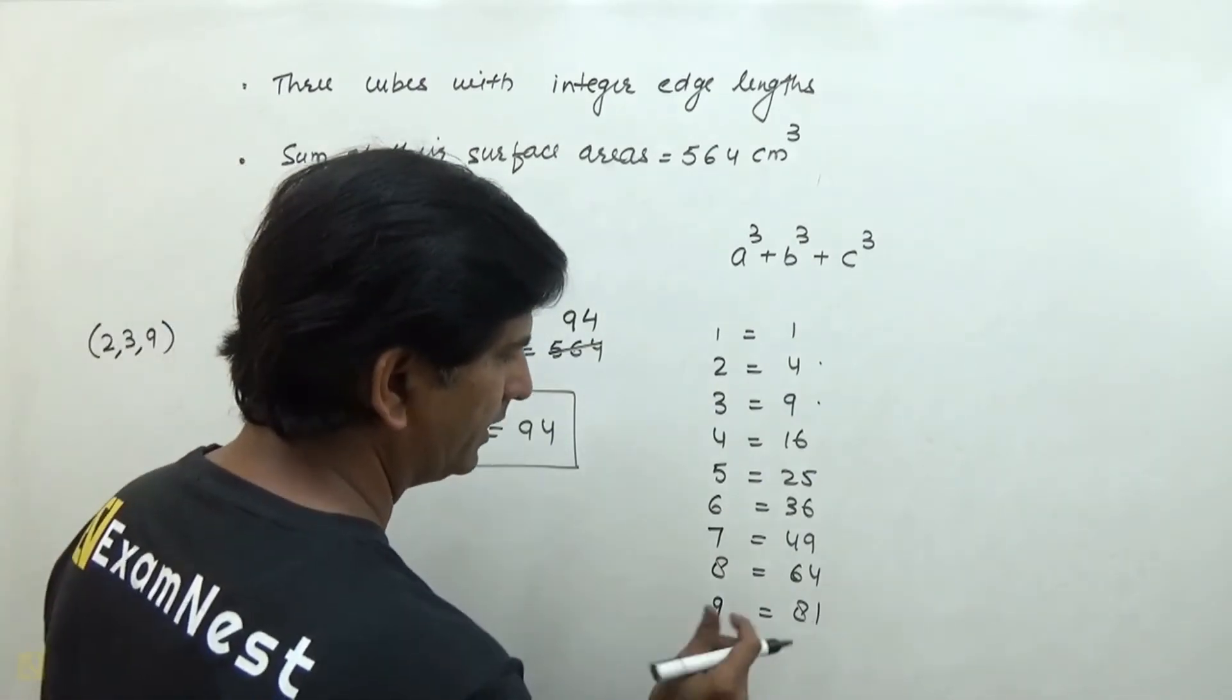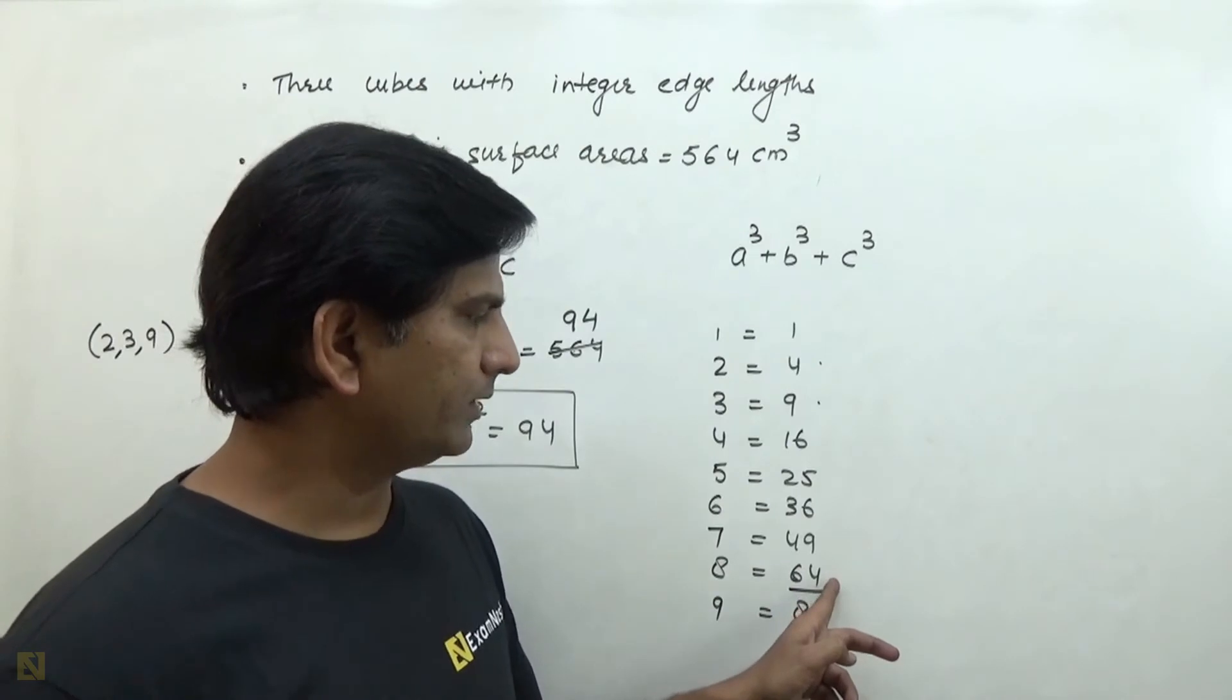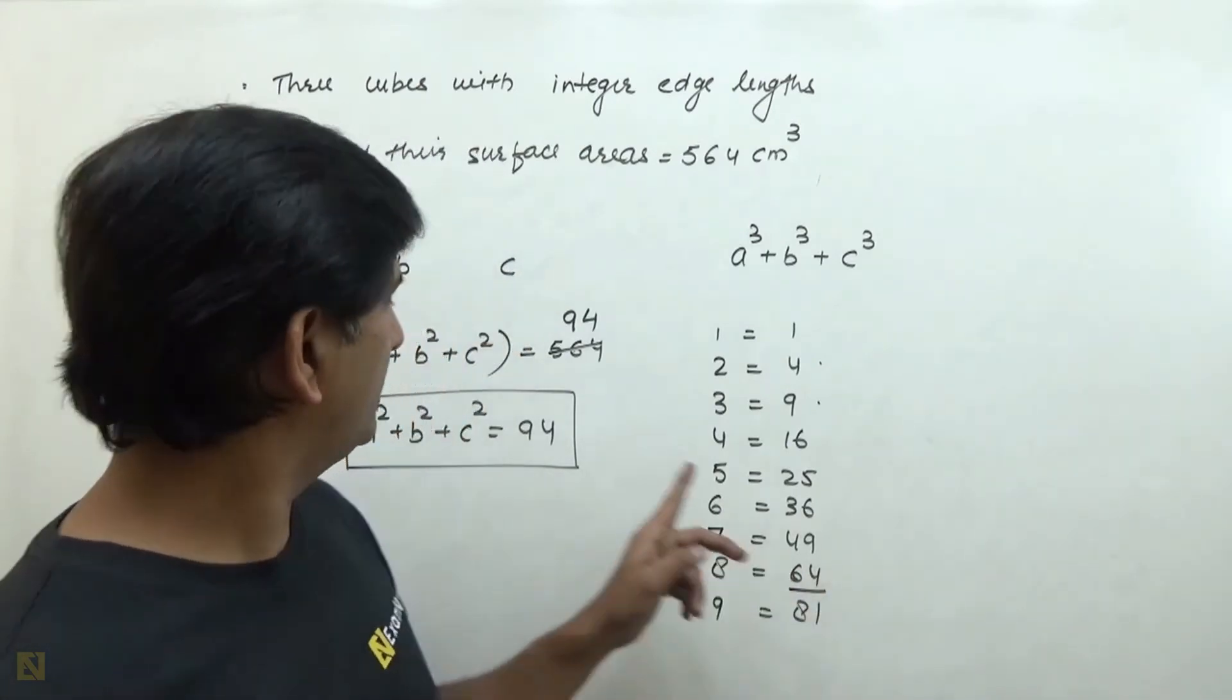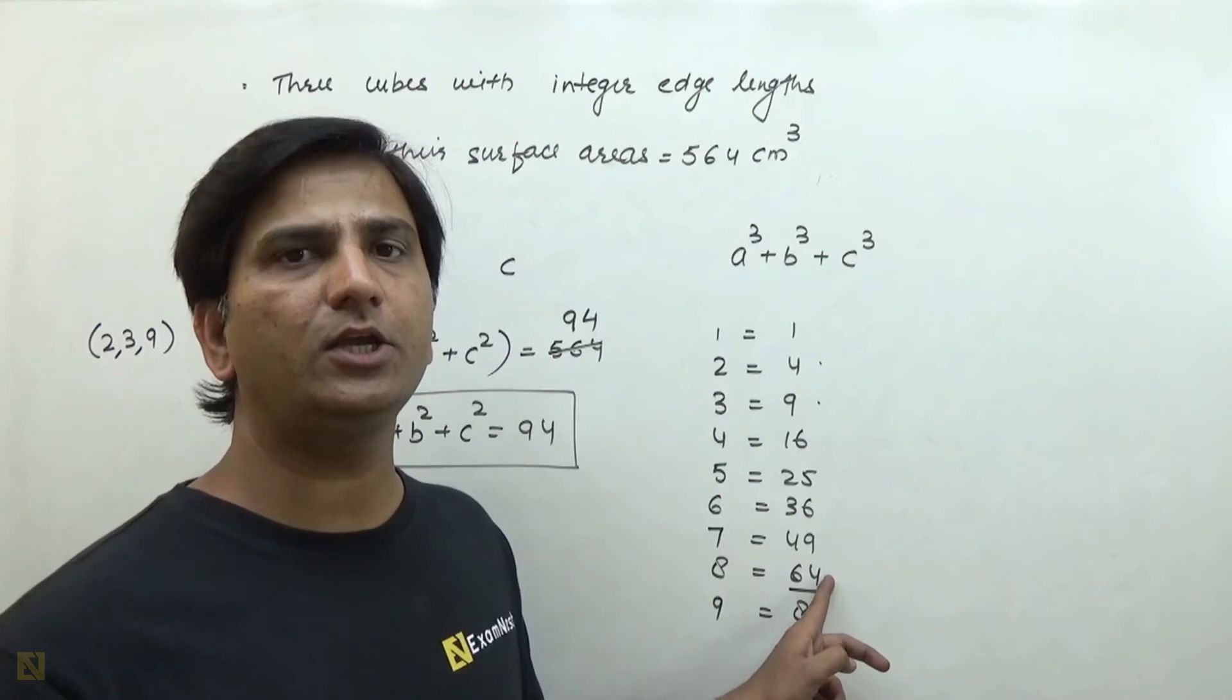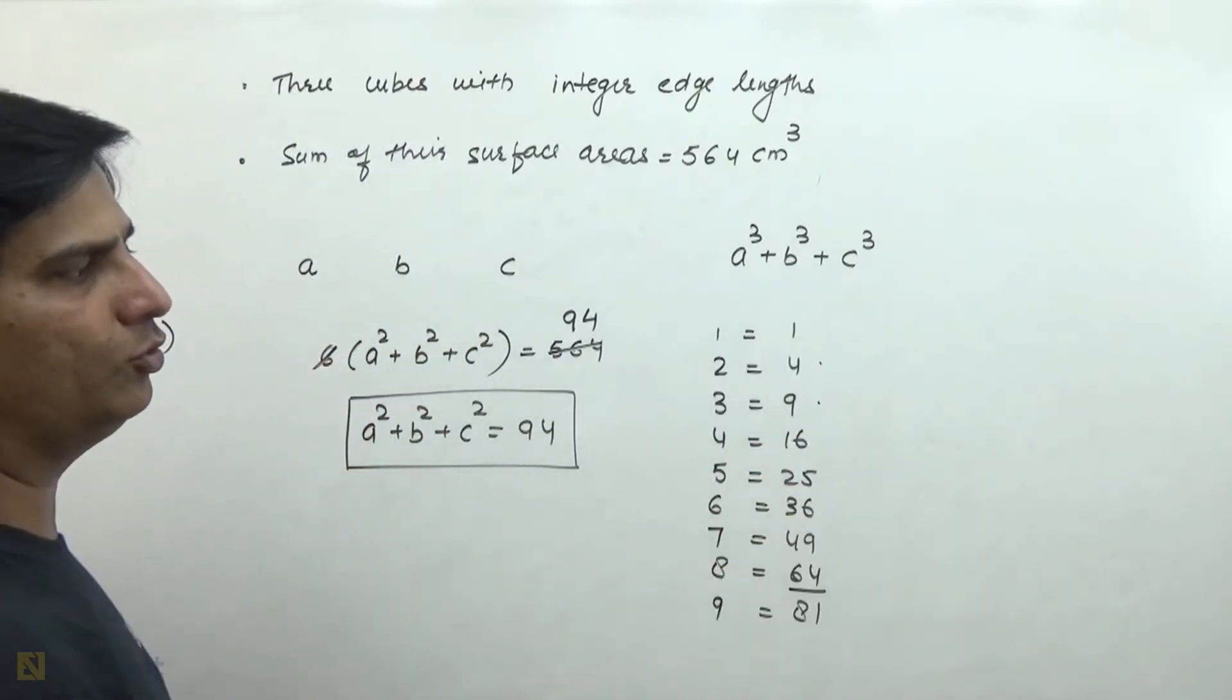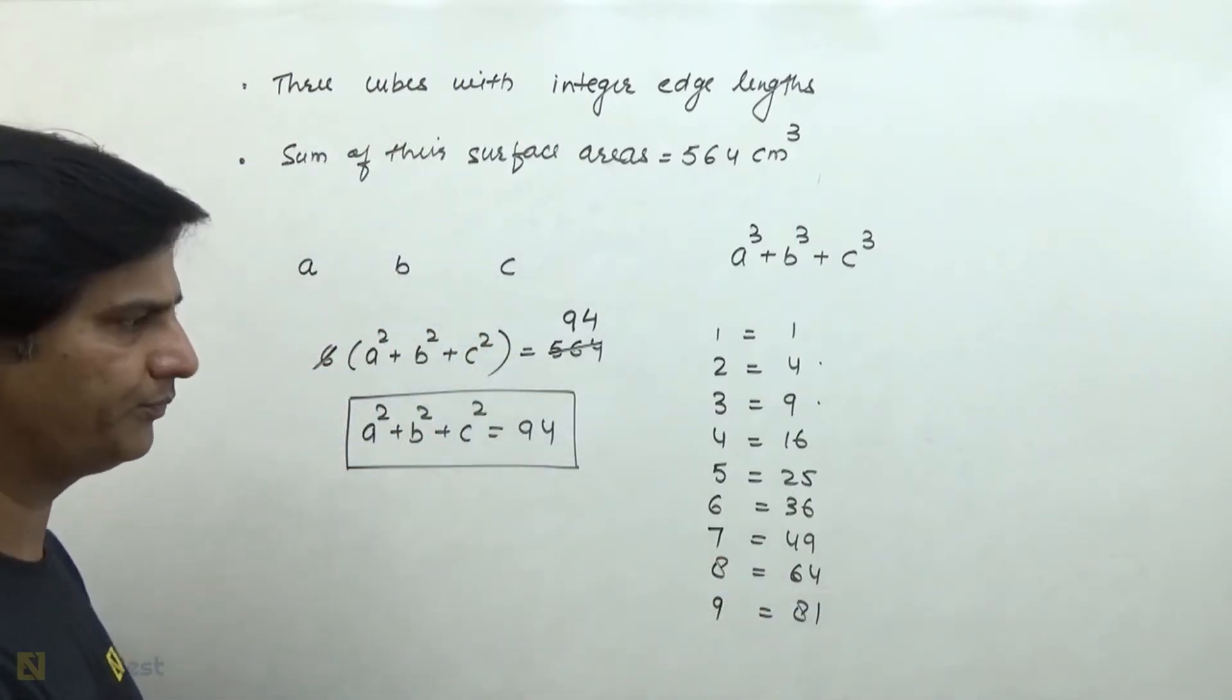So if we take the edge of one cube as 8 cm, then the square is 64. If we need A² + B² + C² equals 94, then we need 30 remaining. If we take any number from them, we don't have 30. We don't have any edge that works.